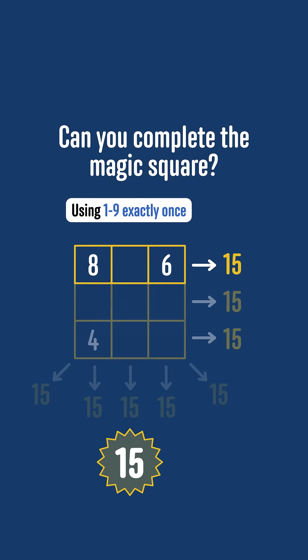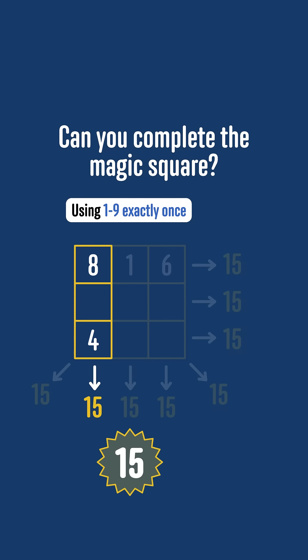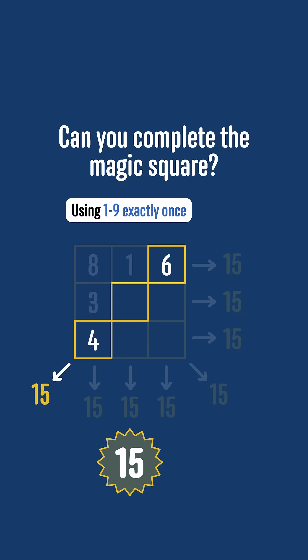From there we have an 8 and a 6 in the top row, so the middle number must be 15 minus 8 minus 6, which is 1. There is an 8 and a 4 in the left column, so the left middle number must be 15 minus 8 minus 4, which is 3. We also have a diagonal with a 6 and a 4, so the central number must be 15 minus 6 minus 4, which is 5.